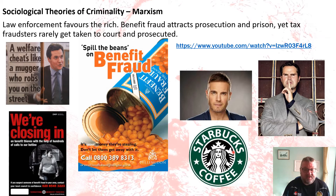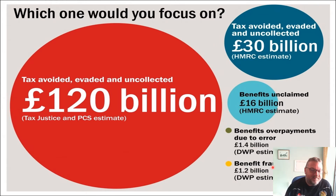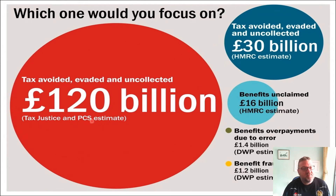To illustrate this with statistics: benefit fraud amounts to £1.2 billion; benefits overpayments are £1.4 billion; yet benefits unclaimed amount to £16 billion — meaning the benefits office is actually in the black. Meanwhile, tax avoided, evaded, and uncollected is estimated at £30 billion, or by the Tax Justice and PCS estimate, more like £120 billion — showing the massive discrepancy between how the bourgeoisie and the proletariat are treated.